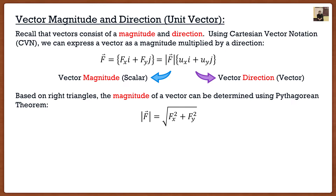This formula serves as an important reminder that magnitudes are never negative. We're squaring the components, so even if they're negative they become positive. And we have a square root — we can't square root a negative number, at least not in this class. So the magnitude is nice and easy: if I have my vector in Cartesian vector notation with its x and y components, I can very simply find the magnitude.